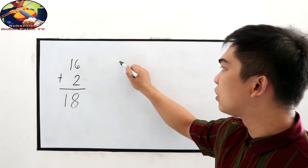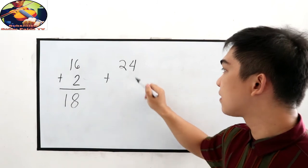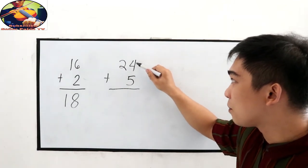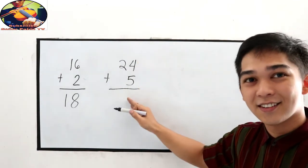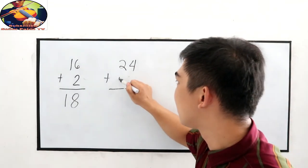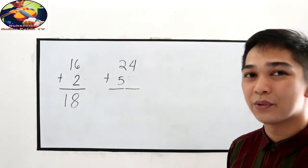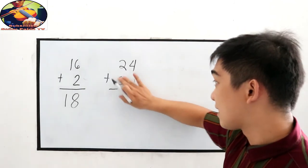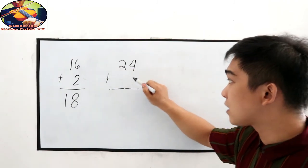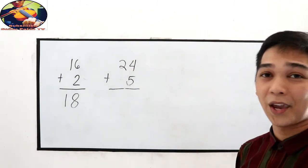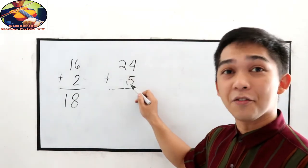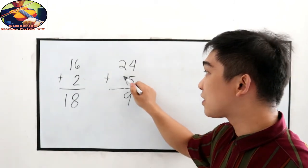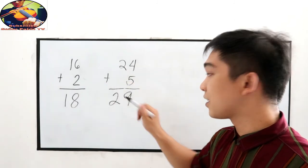Next, let's say I have 24 plus 5. Check your alignment — ones place must be aligned to ones place. If misaligned, that would be considered as 50, which is wrong. So 4 plus 5: 6, 7, 8, 9. We write 9. Then understand that there is 0 here, so 2 plus 0. The answer is 29.